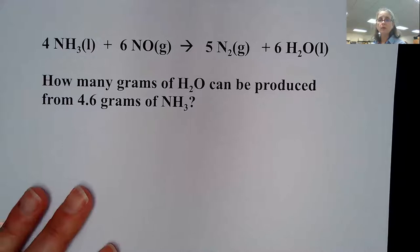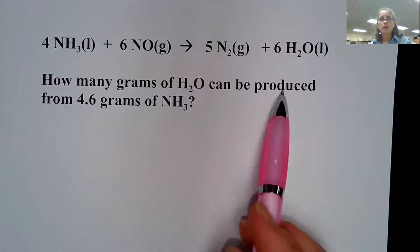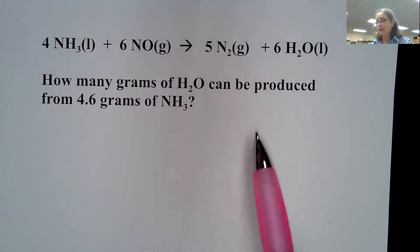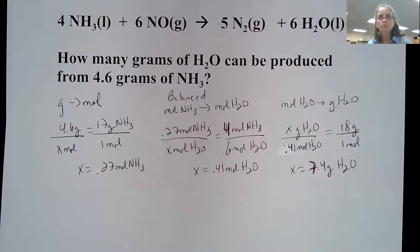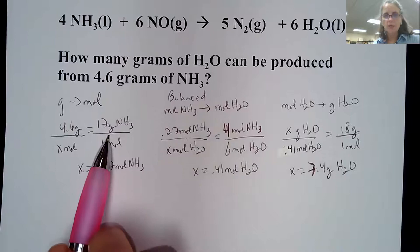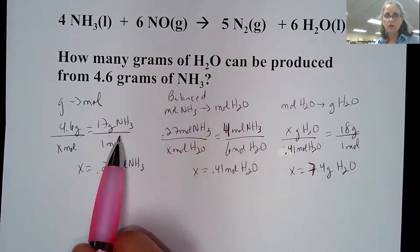I'm going to change the balanced chemical equation, but the steps are exactly the same. How many grams of water can be produced from 4.6 grams of ammonia? I want grams of water and I'm starting with grams of ammonia. Pause the video and try it, then come back for the answer. The first step is grams to moles using molar mass. Ammonia is nitrogen plus three hydrogens: 14 plus 3 gives a molar mass of 17, so you get 0.27 moles of ammonia.